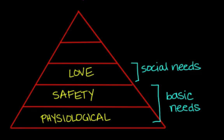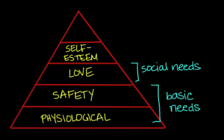The fourth level is our need for self-esteem. We like to feel confident and have a sense of achievement in what we do. We look for recognition and competence of skill that gives us self-confidence, so these needs fall under a level of respect. We like to gain respect from others at this level, but again, this can only occur if the three needs below — physiological, safety, and love — are fulfilled.